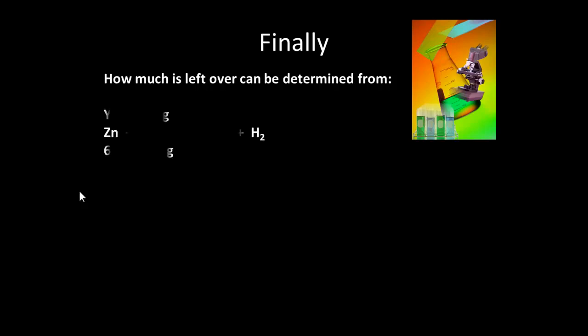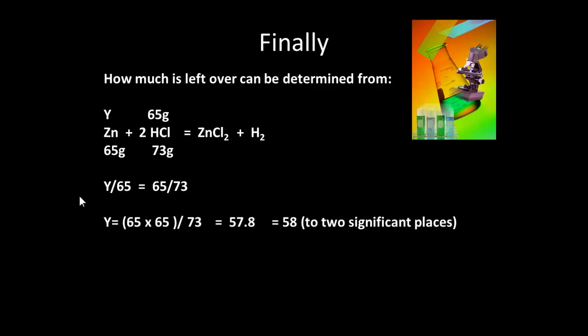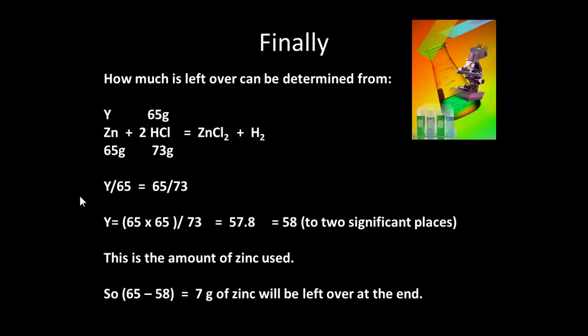Finally, how much is actually left over? We started with 65 grams of zinc and 65 grams of hydrochloric acid and wanted to know how much zinc would have actually been used. So y over 65 equals 65 over 73. Solving for y, y equals 58 — that's the amount of zinc used. Taking 58 from 65 tells me I'm going to have 7 grams of zinc left over.